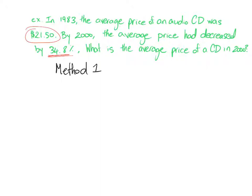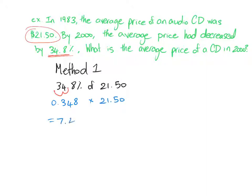In method 1, we figure out what 34.8% of $21.50 is. Converting to a decimal, we get 0.348 multiplied by $21.50, which gives us $7.48. That $7.48 is the decrease that the price underwent. So we take the original price of $21.50 and subtract $7.48, and we get $14.02.